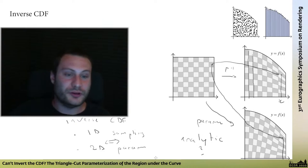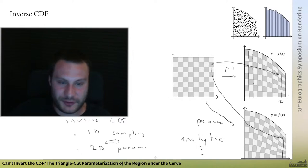The main message of the paper is that even if your inverse CDF is not analytic, there is an infinity of alternative area-preserving parameterizations you can consider instead, and some of them might be analytic. The main contribution is to introduce one such parameterization: the triangle cut parameterization.